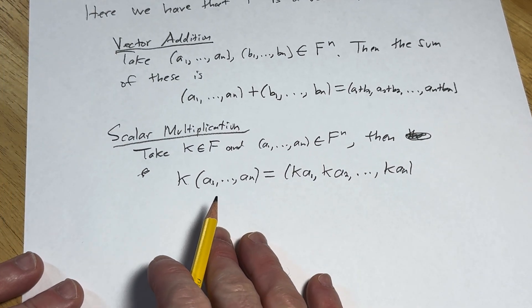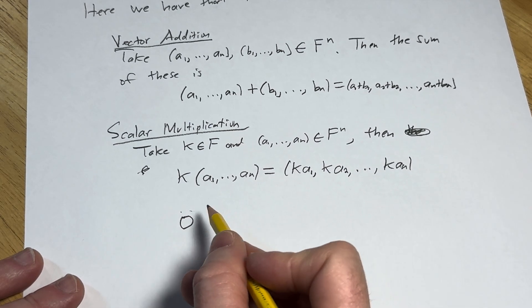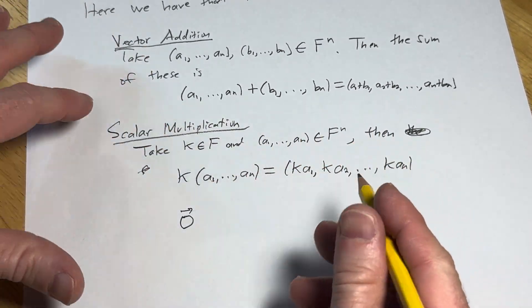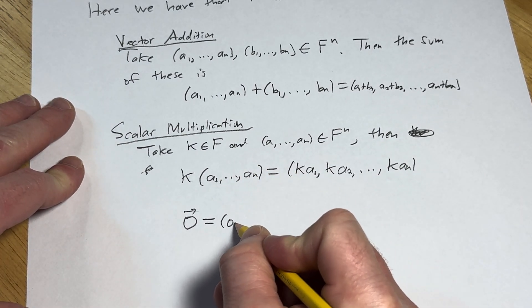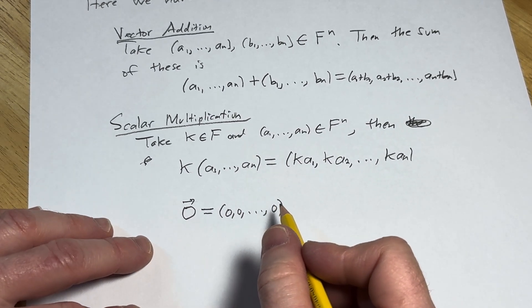The zero vector here. So the zero vector is just 0, and I'm going to put an arrow on it. You don't have to, but you could, or a bar. If it's in a textbook, it's in bold. The zero vector would be the vector whose entries are all zeros. Every single one. This would be the zero vector.